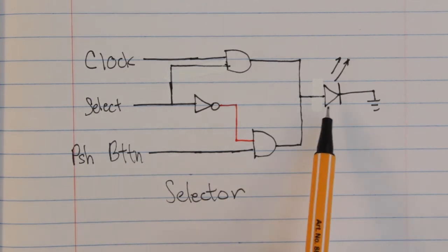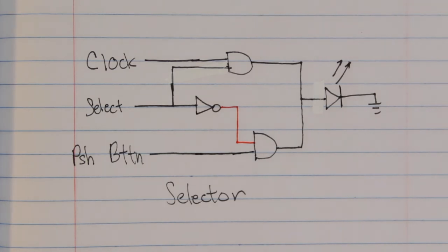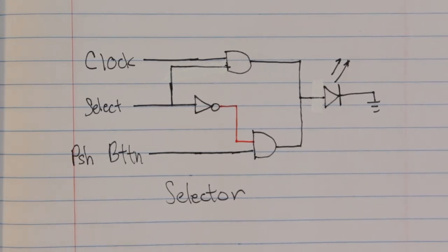So if the clock is high and select is high, then output is high. If the clock is low and select is high, then the output is low. Same idea with the push button. Now we've gone over this before so I don't want to waste too much time here.